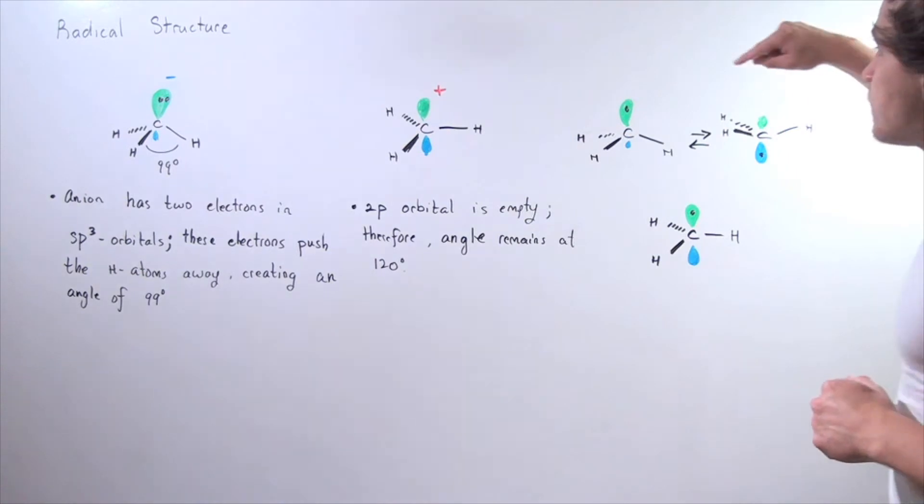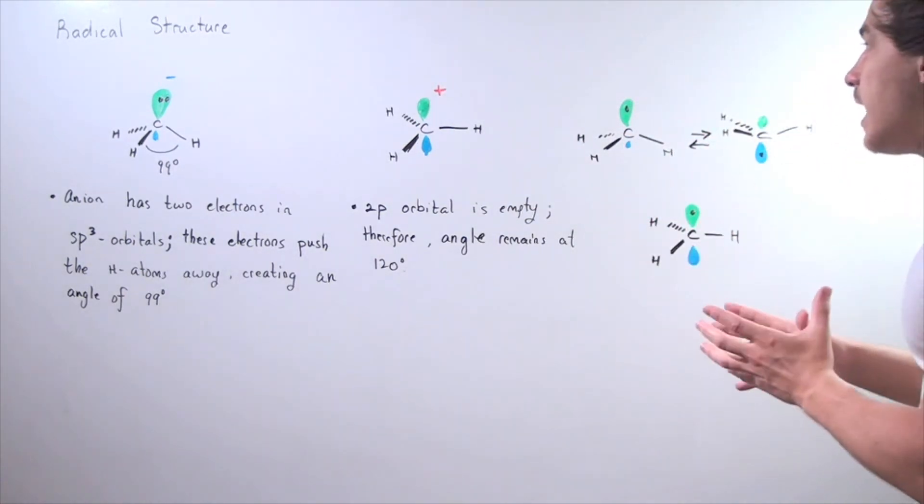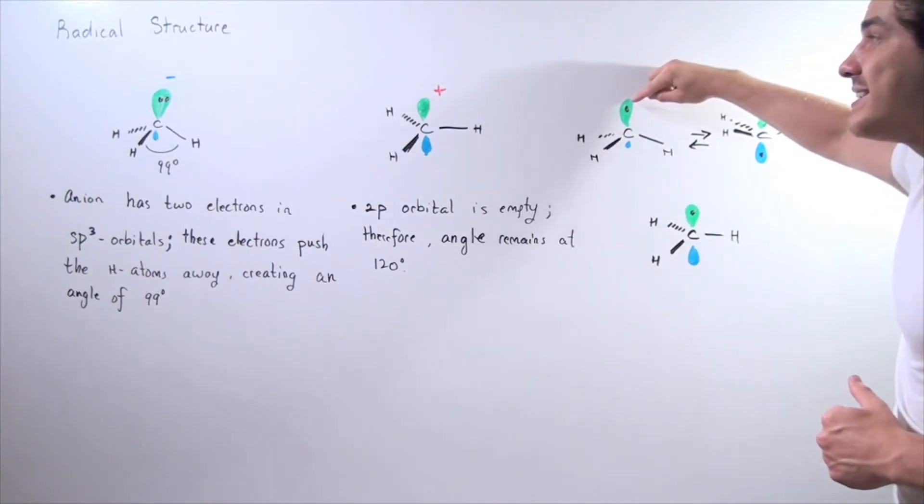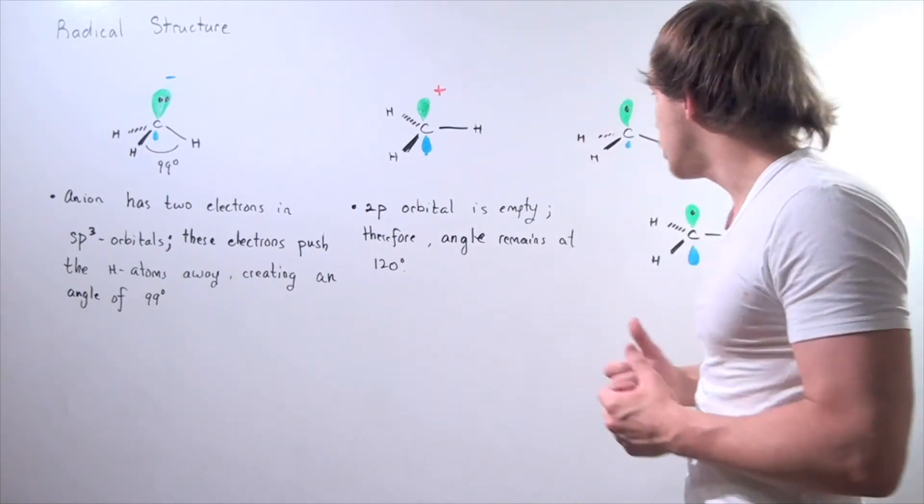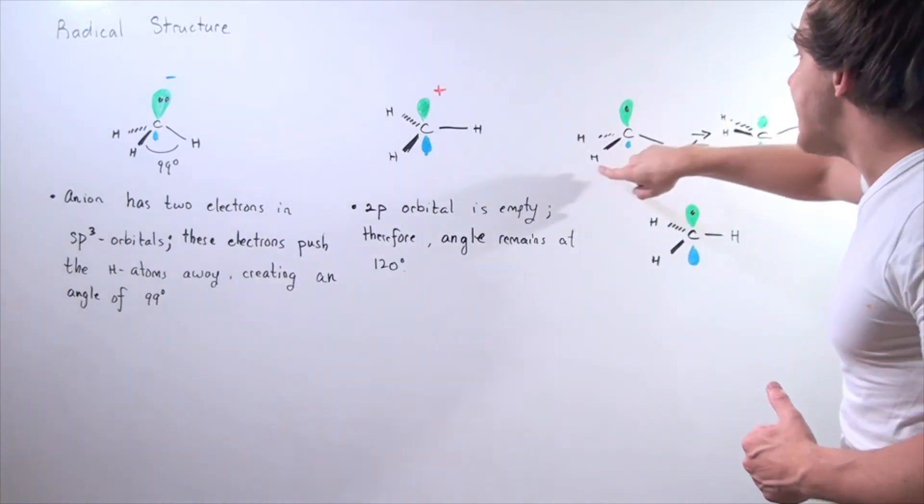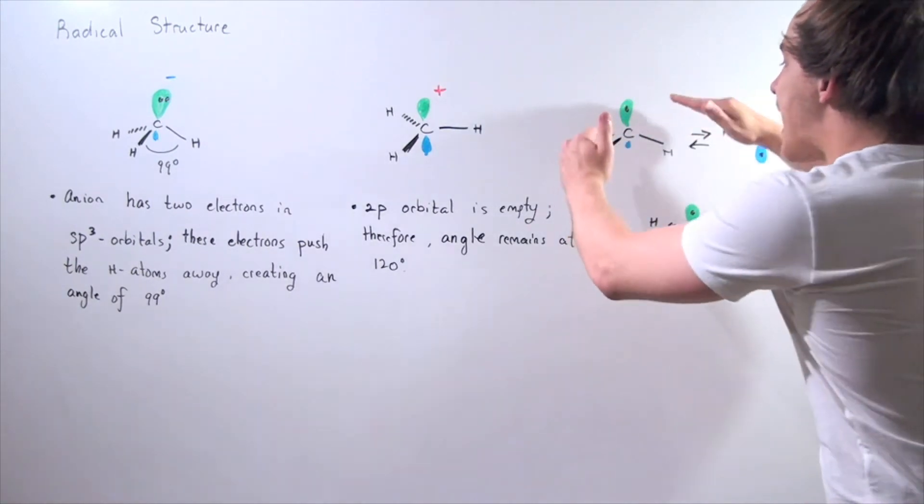This electron is in the orbital all by itself, and because it's alone, it doesn't create enough electrostatic repulsion to push these H atoms downward. So the structure is only slightly shallow.